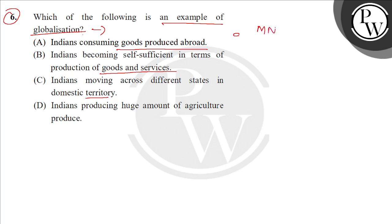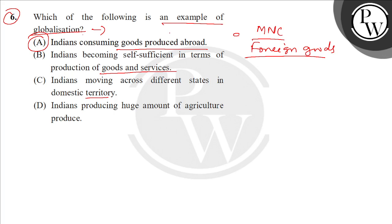MNC comes in. What happens in this situation? We are getting foreign goods produced in India — foreign goods and services. India is consuming foreign goods. MNC means globalization. Here is an example: India is consuming global goods.